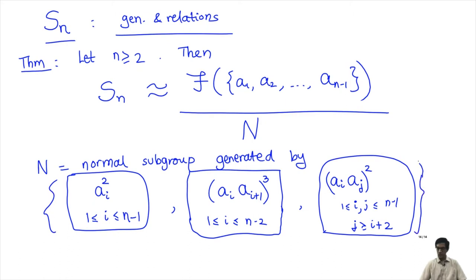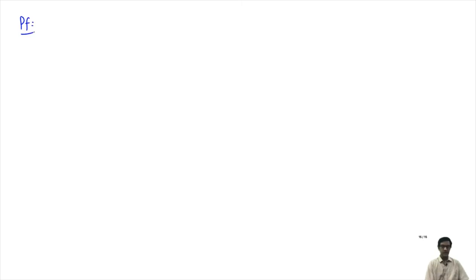Together, these three collections give us a set of elements whose normal subgroup is exactly the kernel of the map from the free group to Sn. Let me give an indication of the proof, which follows almost the same lines as for S3.